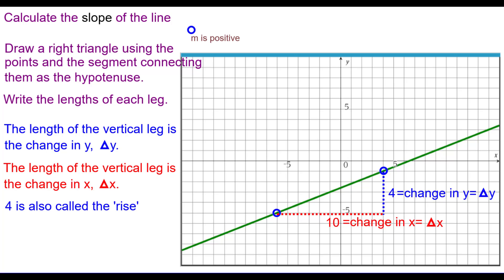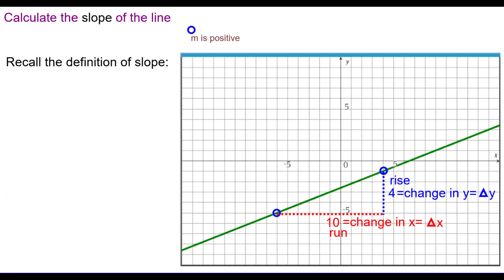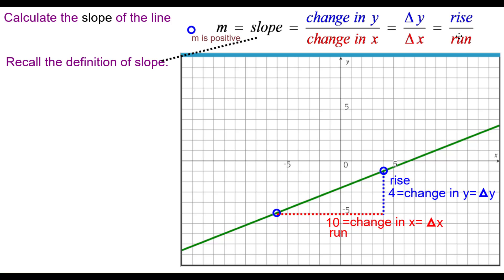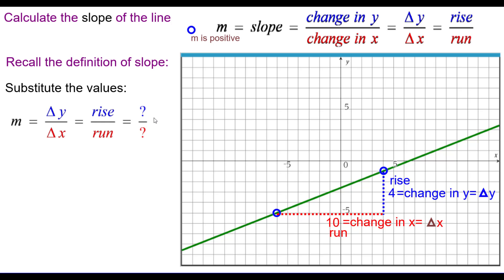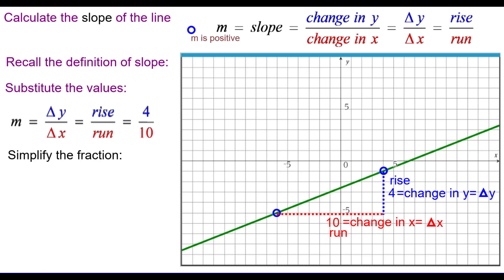We also call the change in y the rise, and the change in x is the run, depending on what your teacher or course uses. Recalling the definition of slope — change in y over change in x, rise over run — we substitute the values. Since we know the slope is positive, the rise is 4 and the run is 10. Simplifying that fraction, the slope is positive two-fifths.